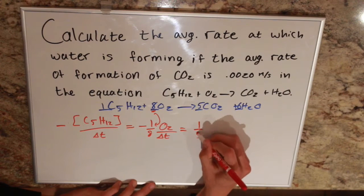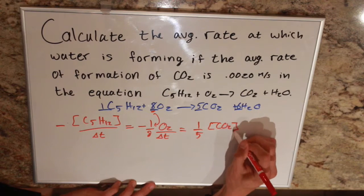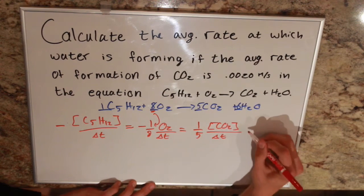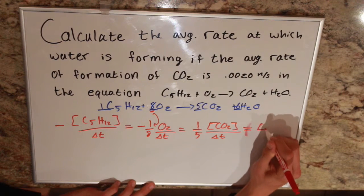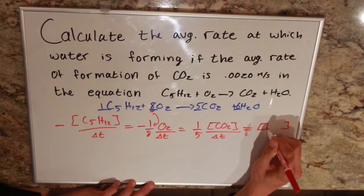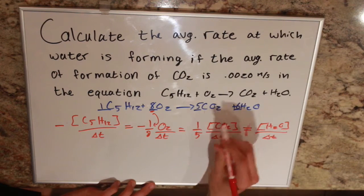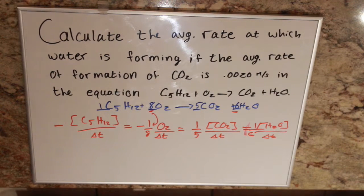That equals 1 fifth, CO2 over delta T. This is positive since we're producing CO2 as our product. Lastly, it equals 1 over 6, H2O over delta T. The coefficient is 6, so we put 1 over 6. It's positive because we're forming water.